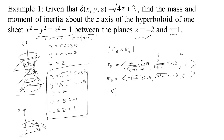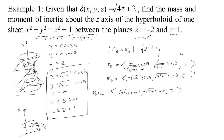Computing the cross product: the i component is 0 minus negative square root of z squared plus 1 times cosine theta; the j component is negative square root of z squared plus 1 times sine theta minus 0; and the k component — multiplying through — gives z cosine squared plus z sine squared, which is simply z. To find the length of r sub z cross r sub theta, we square each component and sum: z squared plus 1 times cosine squared plus z squared plus 1 times sine squared gives z squared plus 1, plus another z squared makes 2z squared plus 1. Taking the square root gives our conversion factor: square root of 2z squared plus 1.